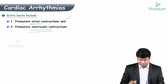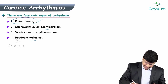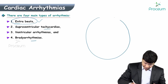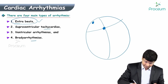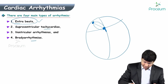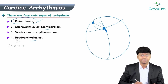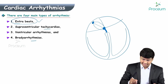Before discussing cardiac arrhythmias further, you should know the basic conducting system of the heart. It has the following components: the SA node, the AV node, and in between the SA node and AV node we have the internodal fibers. Then we have the bundle of His, from which we have the right bundle branch and the left bundle branch.